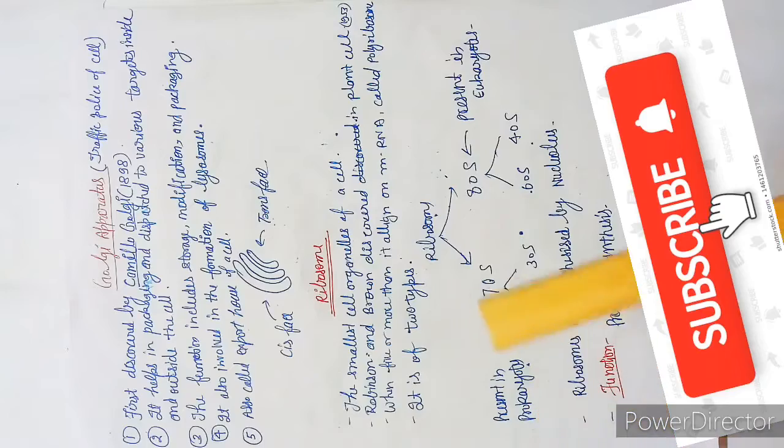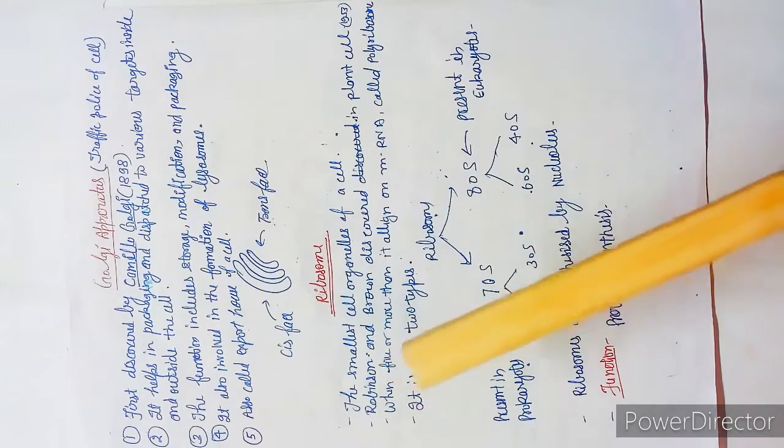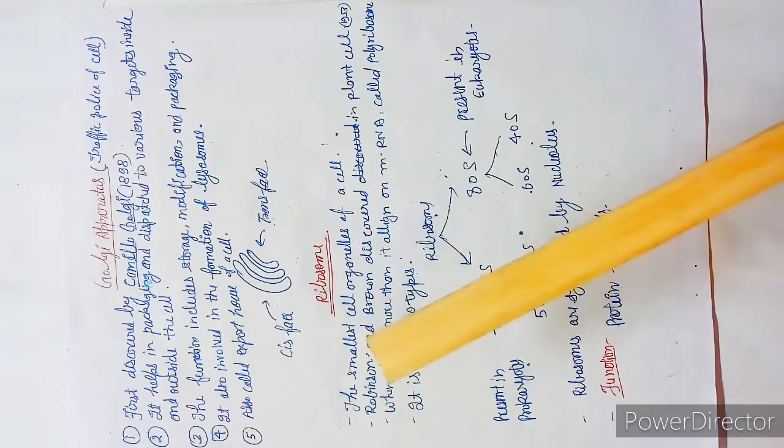This is the smallest organelle of a cell, and who discovered it? Robinson and Brown.